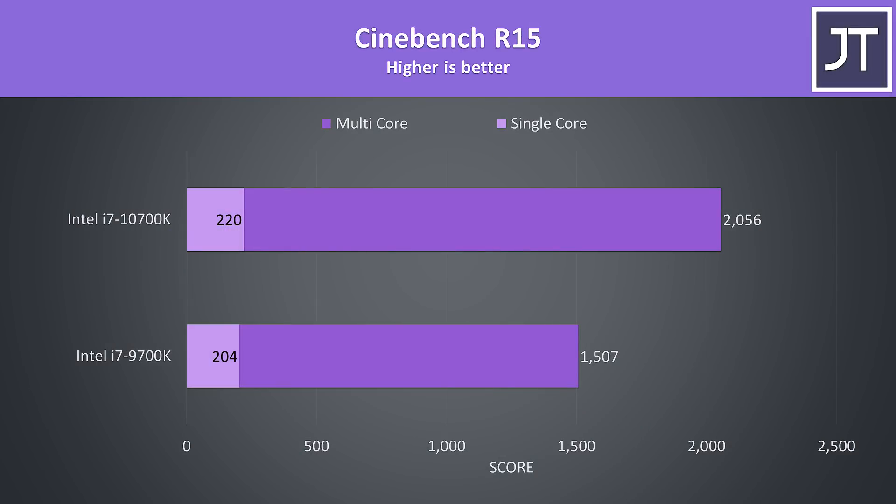I've also tested the older Cinebench R15 as a lot of people still use it. This time single core was around 8% faster with the 10700K, while the multicore score had a similar 36% gain.